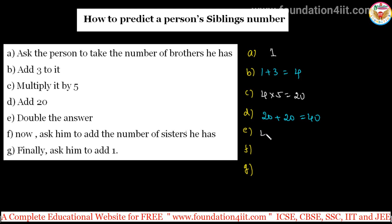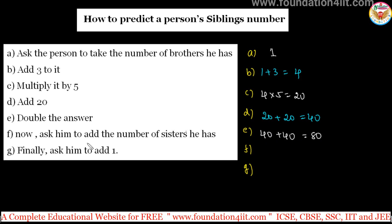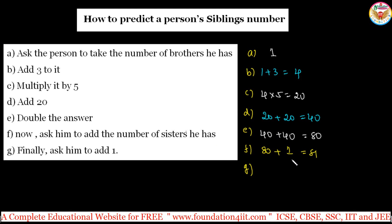Then double the answer. We got 40, so doubling gives 80. Now ask them to add the number of sisters they have — if there is no sister, add zero. I'm taking one sister, so 80 plus one equals 81. Finally, ask them to add the number one to the final answer. So 81 plus one equals 82.